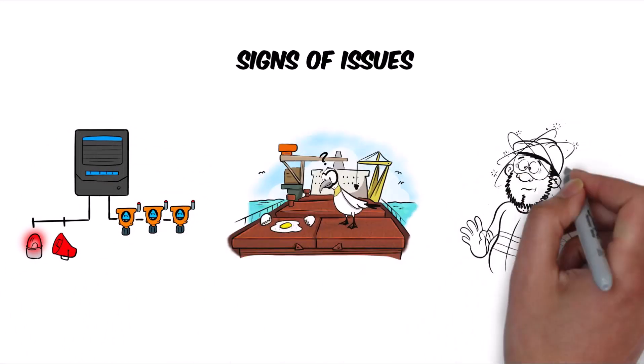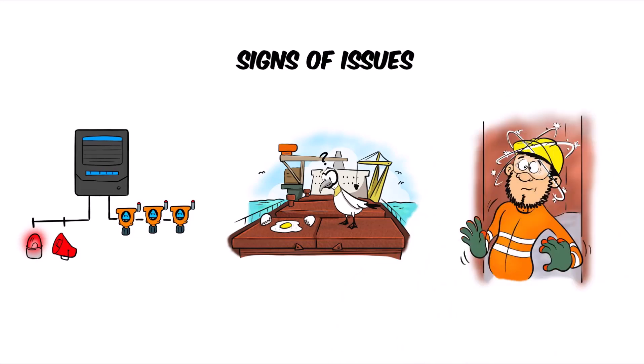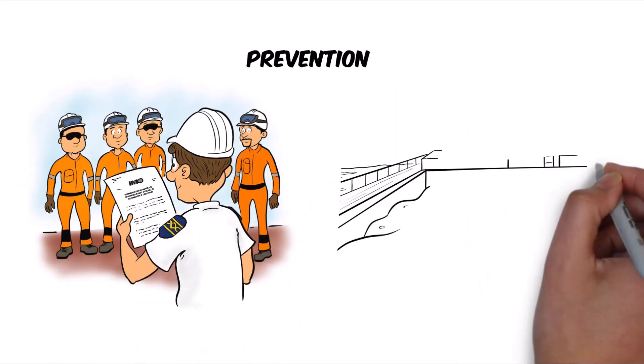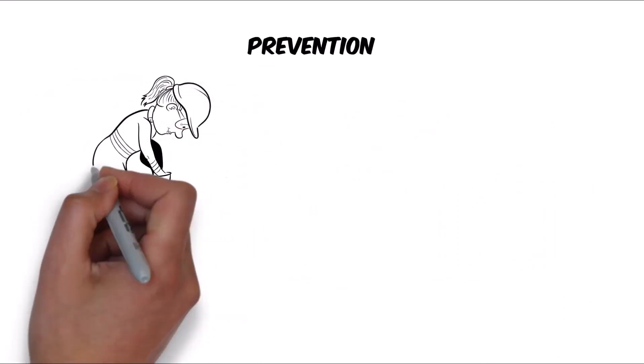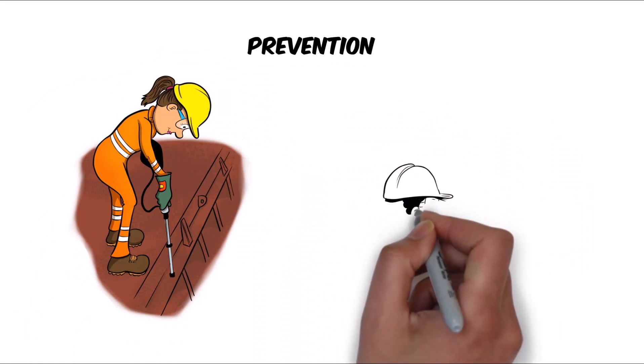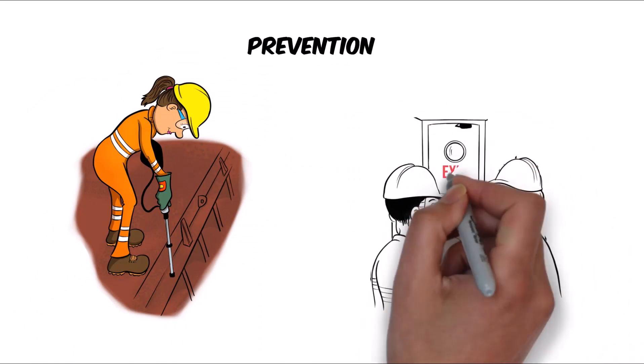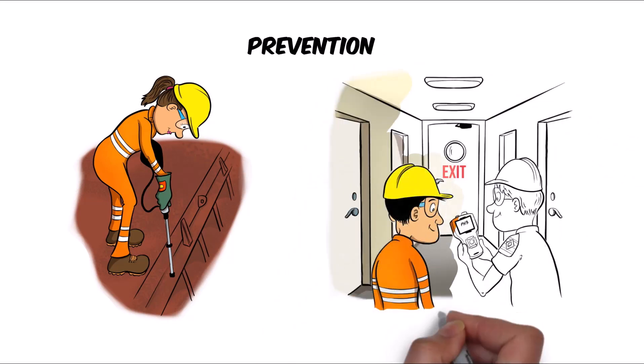Prevention: strictly follow the fumigation instructions, distribute the fumigant tablets evenly, ensure cargo holds are weathertight, and take regular gas measurements for fumigant gas in working and rest areas adjacent to cargo holds being subject to fumigation in transit.